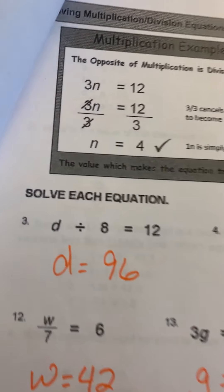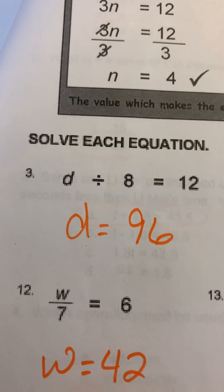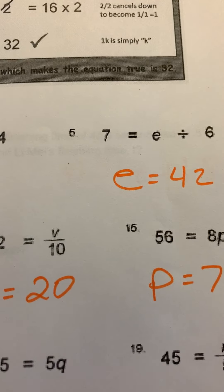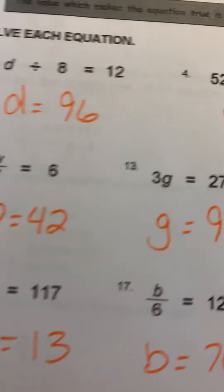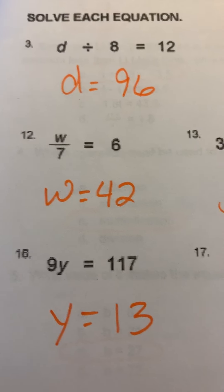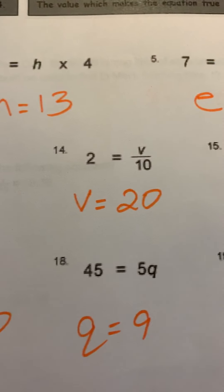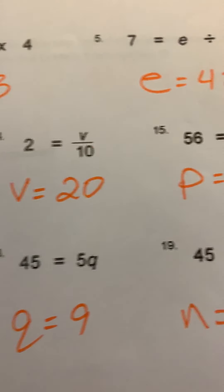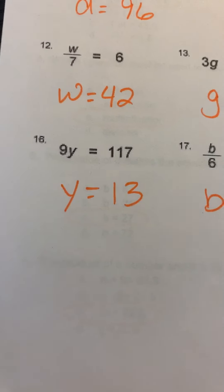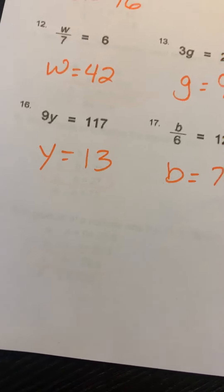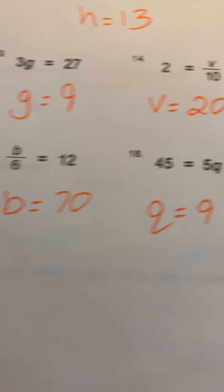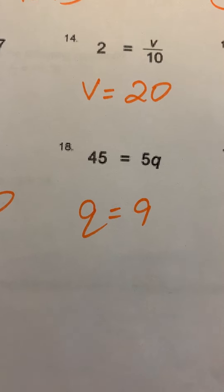Page number two: number three is D equals 96, number four H equals 13, number five E equals 42, number 12 W equals 42, number 13 G equals 9, 14V equals 20, 15P equals 7, 16Y equals 13, 17B equals 70, and 18Q equals 9.